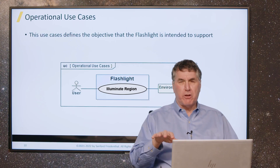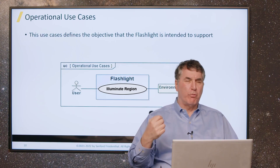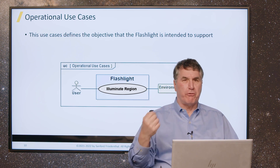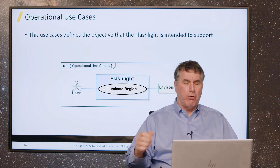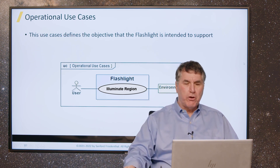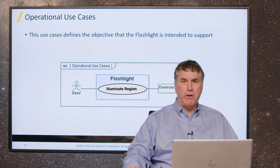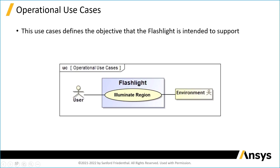We start by stating the objectives — what is the purpose of the system or the goal. The goal of this flashlight is to illuminate a region; that's what we're trying to accomplish. What you see here is the flashlight and the external elements of the flashlight: the user and the environment.